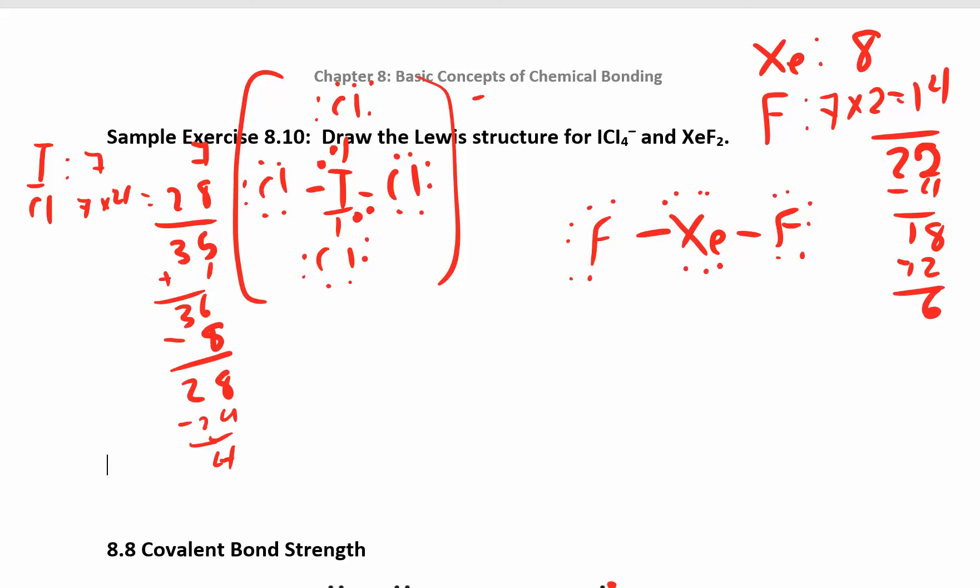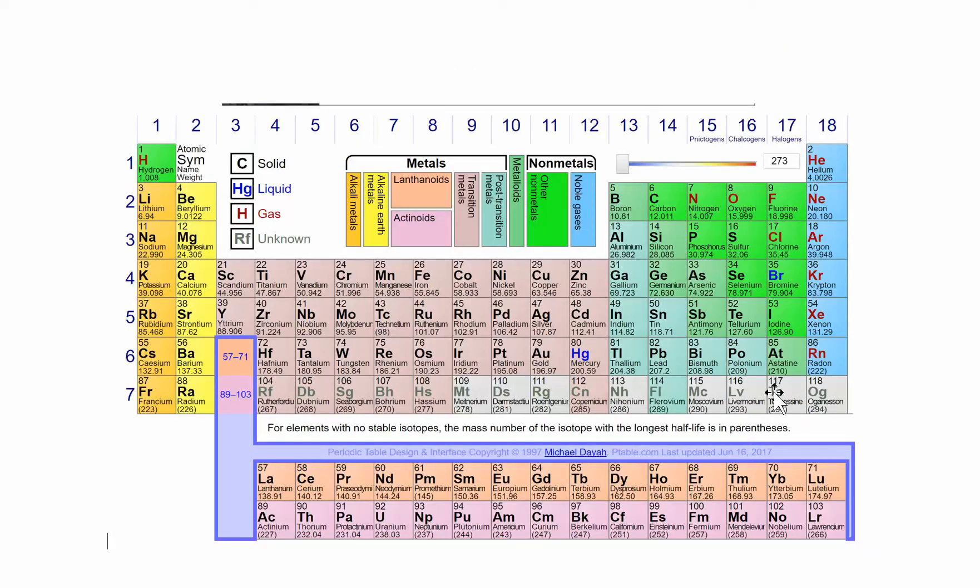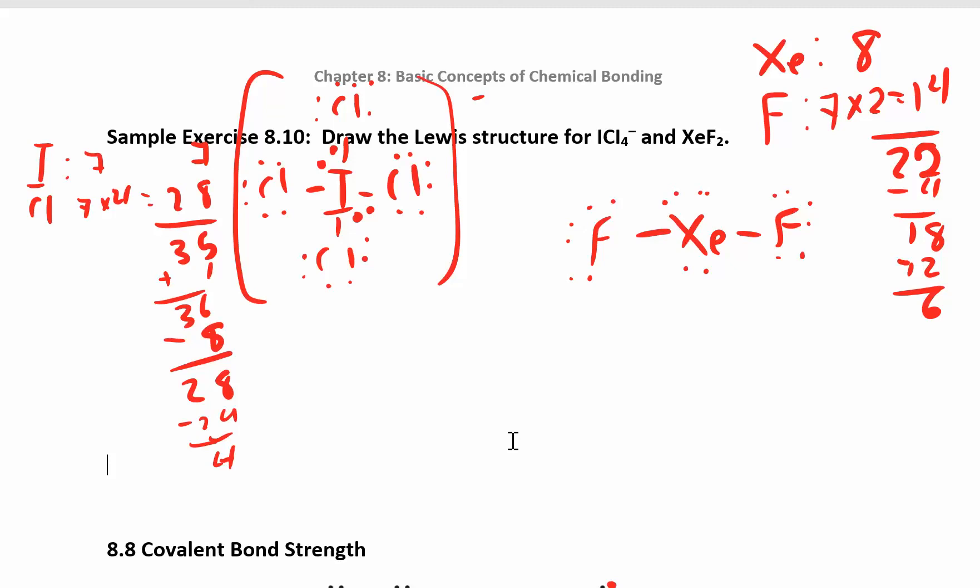So Xenon actually takes on two, four, six, eight, 10, which is okay because where is Xenon? The periodic table is all the way down here. He's in row five. So that's beyond row three. So he can take on extra electrons. And he's good.